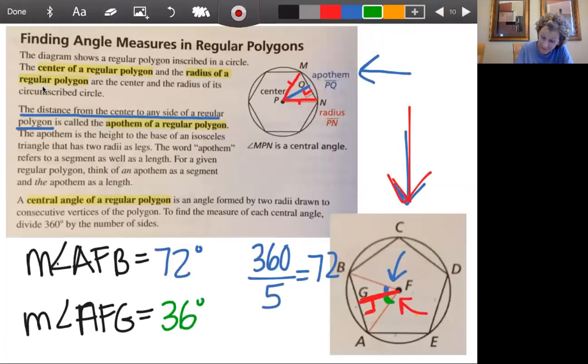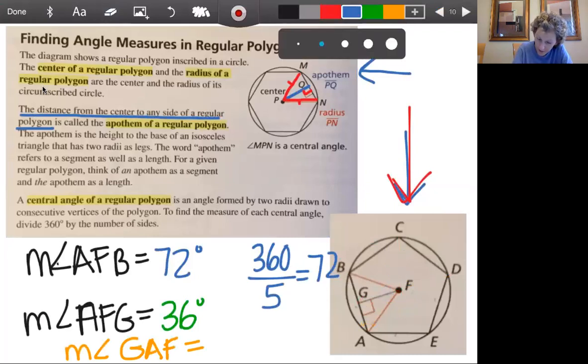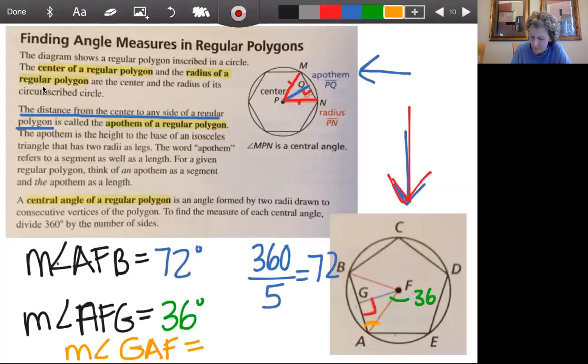All right. And if I needed to find this angle here, which I guess would be measure of angle GAF, that would be easy to do at this point. Because now let me erase a little bit so we can write this all in. That we have this angle here is 36. Of course, this is a 90. Can you find this angle? And that would of course be 90 minus 36, which would be 54 degrees.